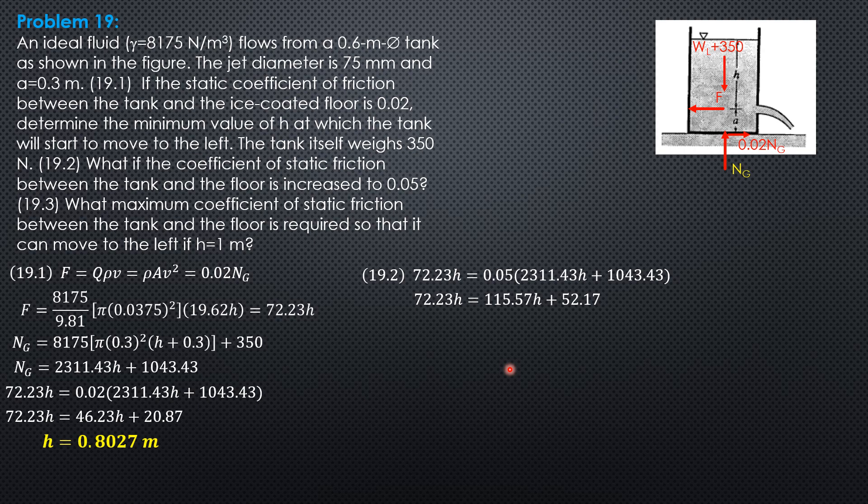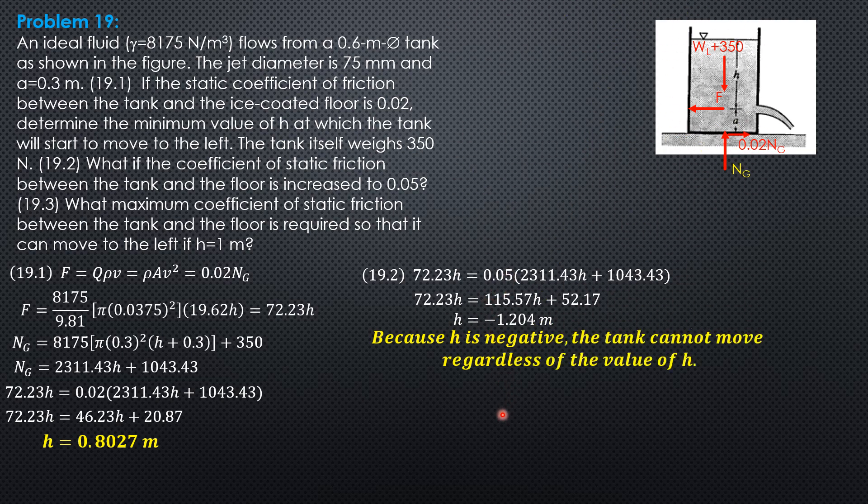So in this case, H is negative 1.204, meaning the tank cannot move regardless of the value of H because H is negative. The coefficient of static friction is too high for this problem.